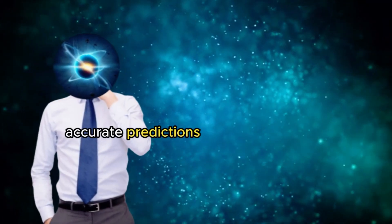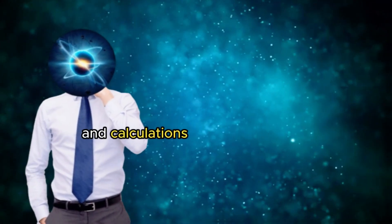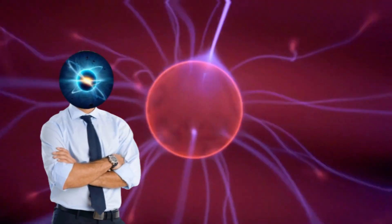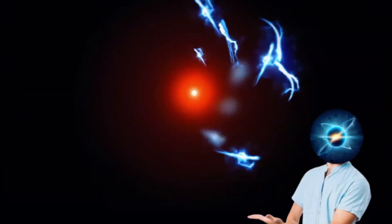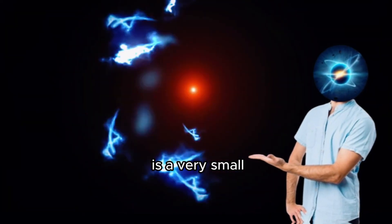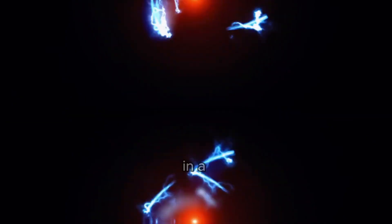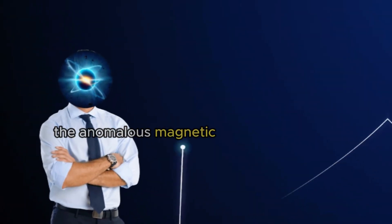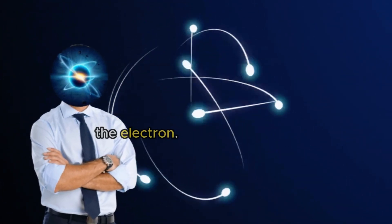QED enables accurate predictions and calculations for various phenomena in the field of electrodynamics. For example, it predicted the Lamb shift. The Lamb shift is a very small energy difference between two atomic states in a hydrogen atom and explains the anomalous magnetic moment of the electron.